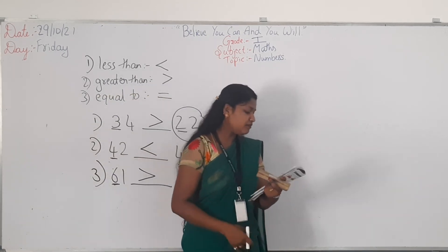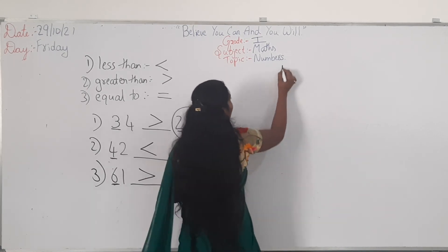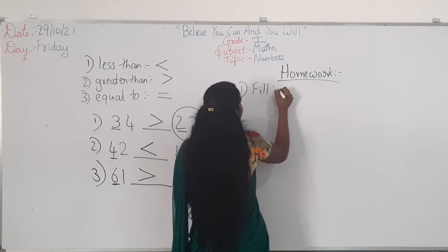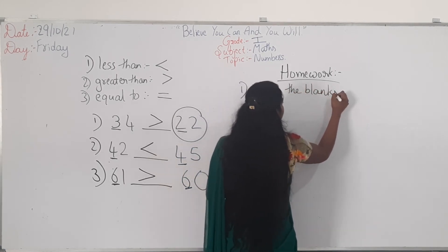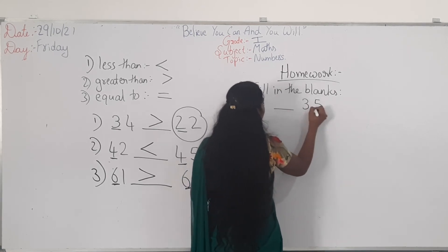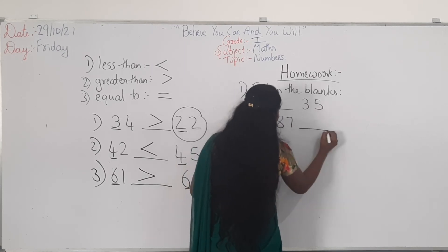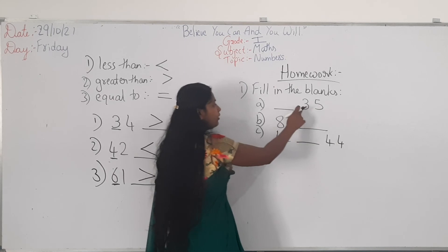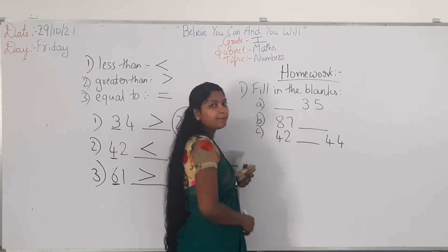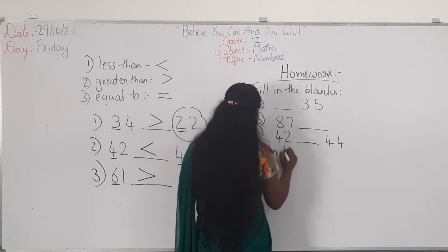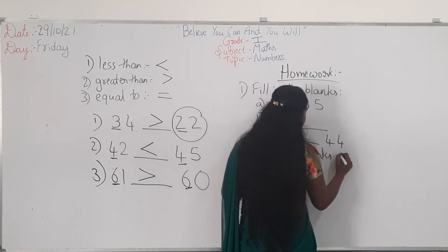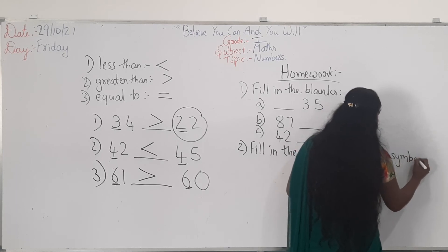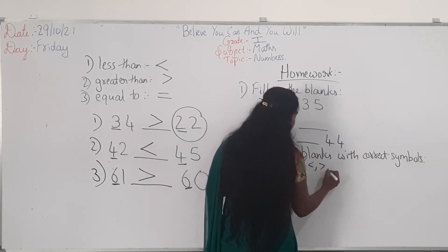Today this is enough. We will be having homework — please copy down. First one is fill in the blanks: blank 35, 87 blank, 42 blank 44. Here you have to write the numbers. The second one is fill in the blanks with correct symbols — less than, greater than, equal.